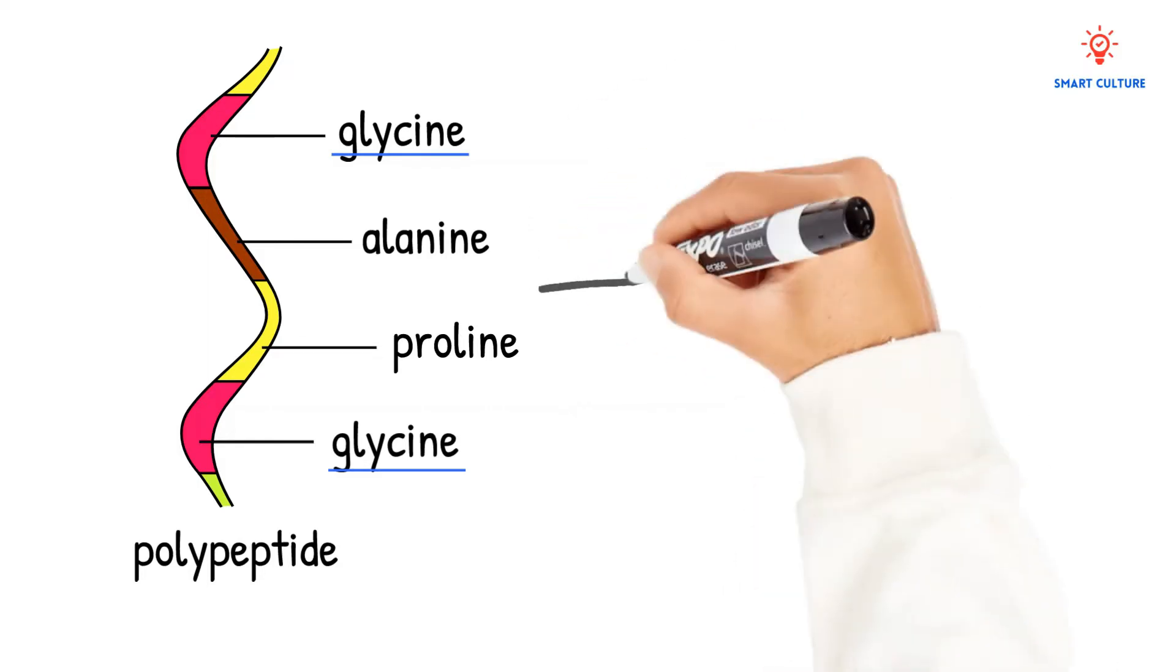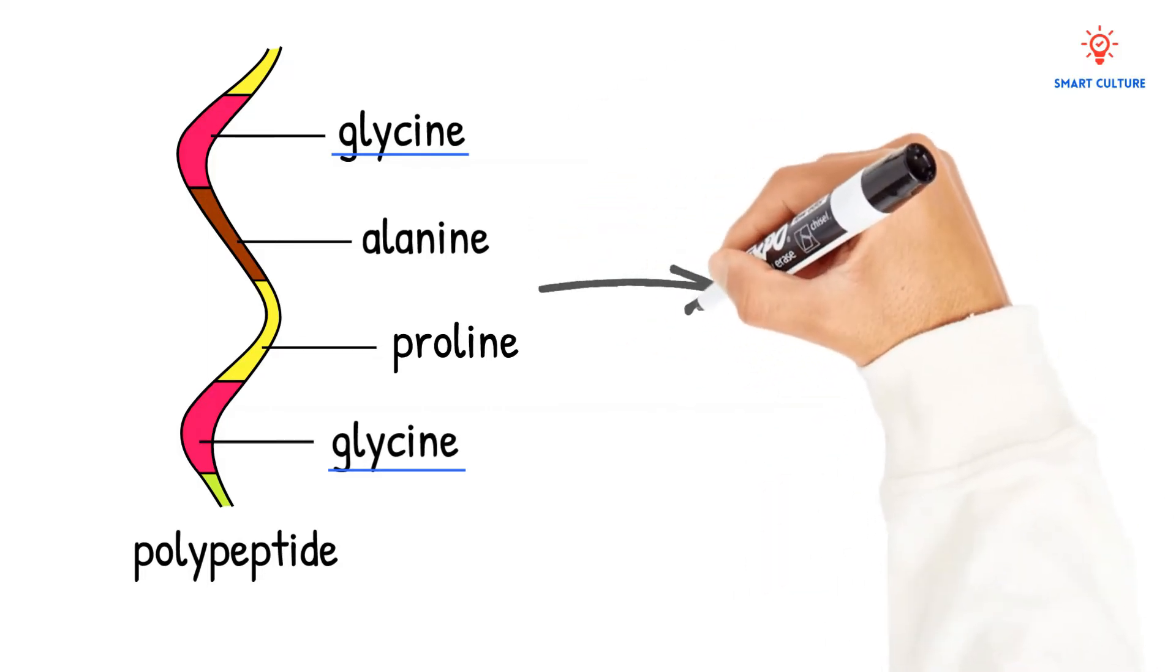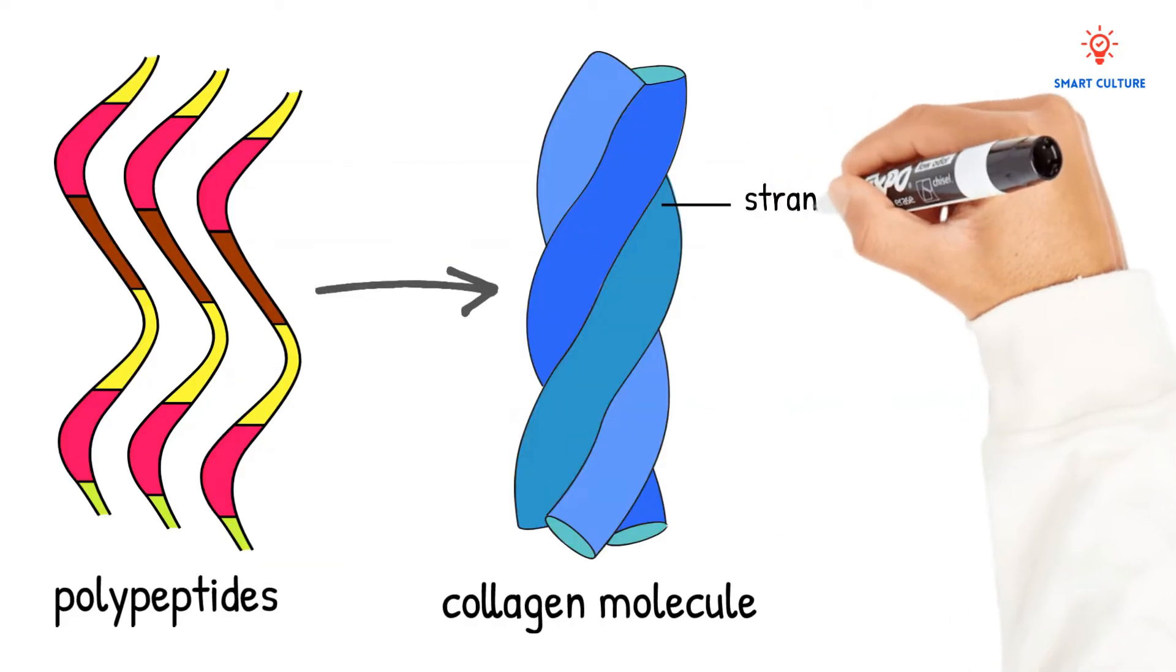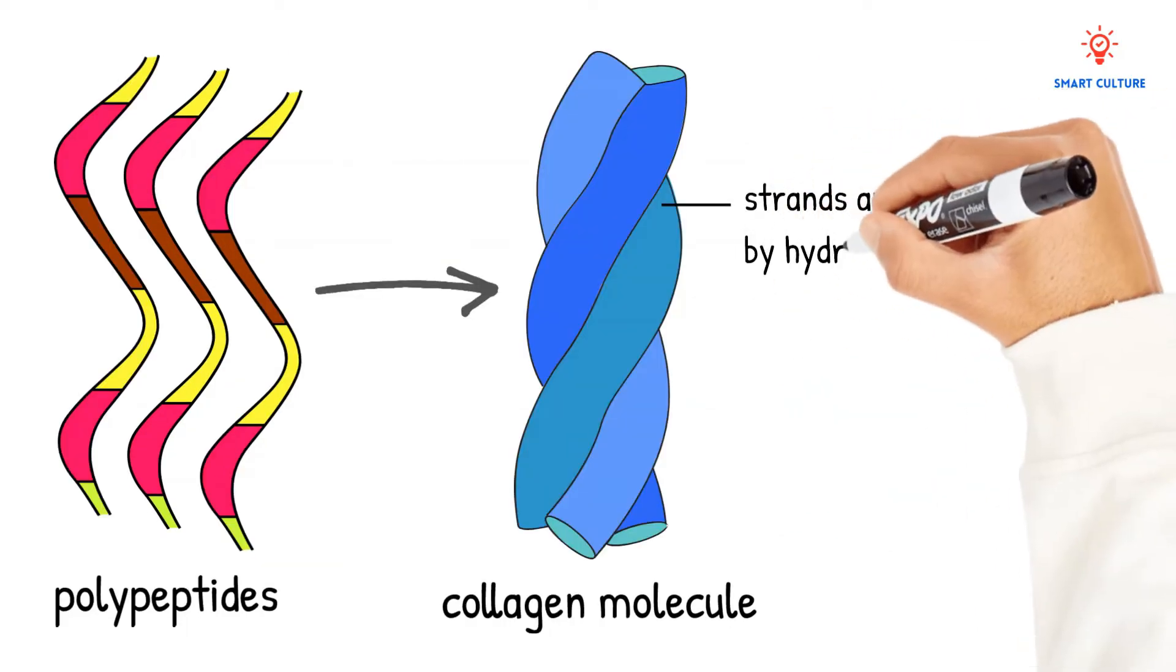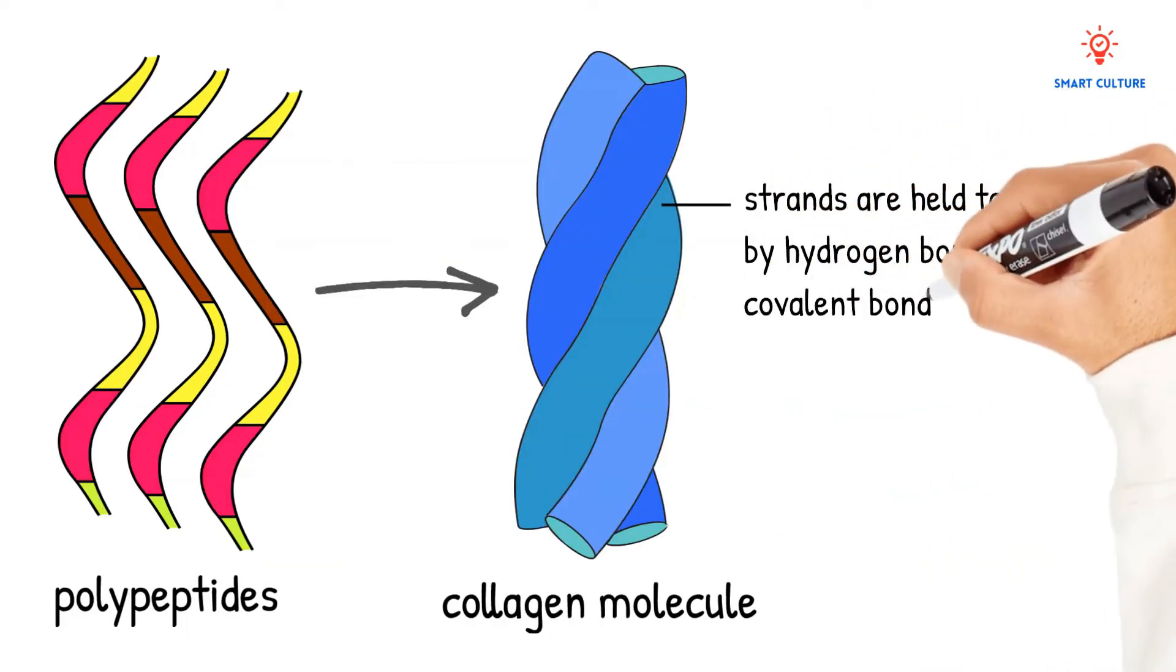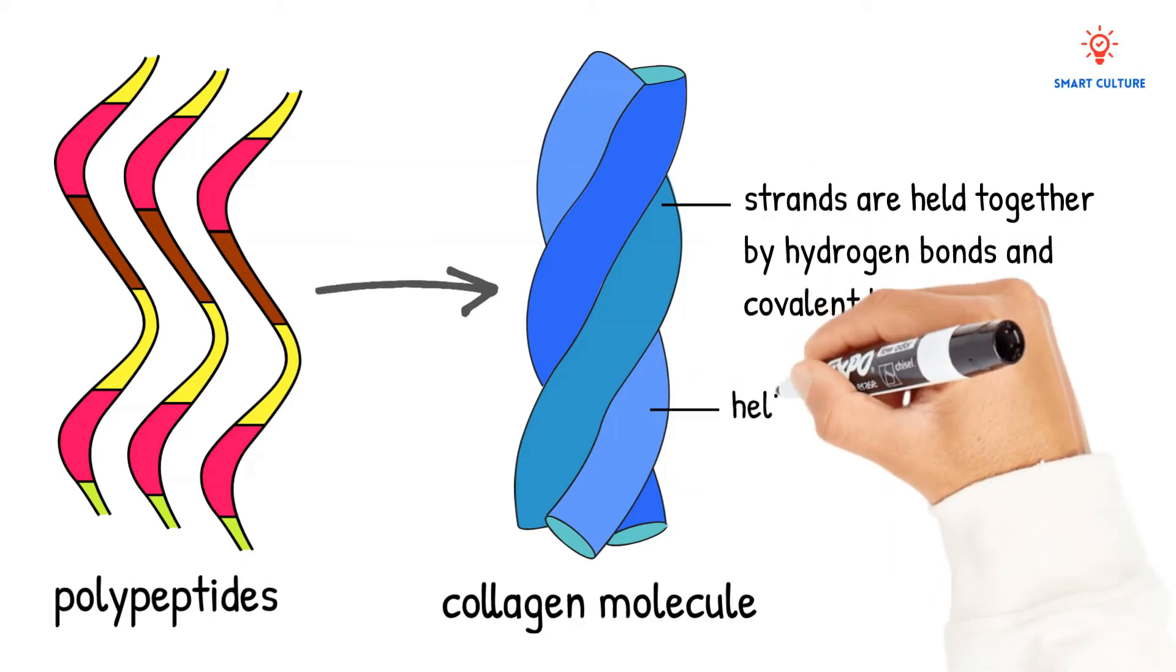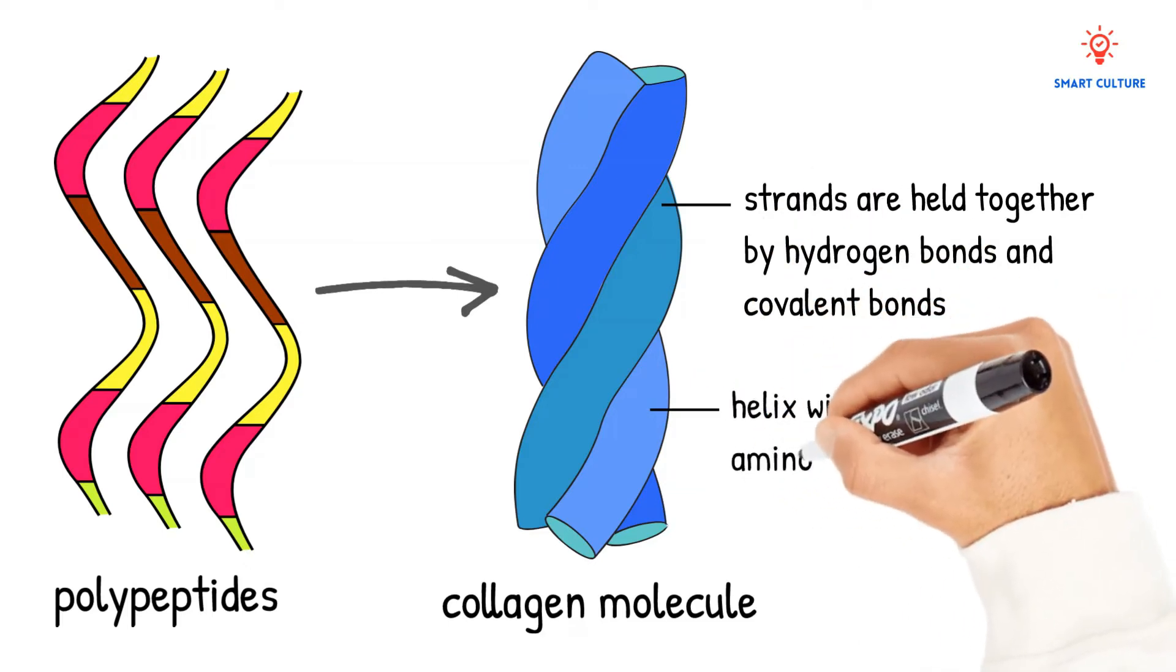These strands are held together by hydrogen bonds and covalent bonds. Another important thing to take note of here is that there are three amino acids per turn in these helices.